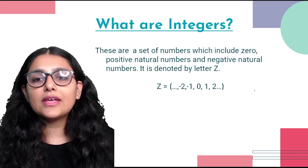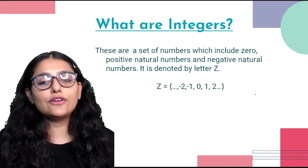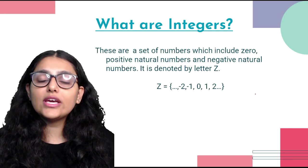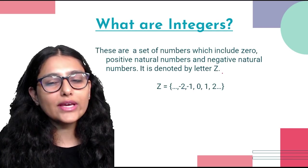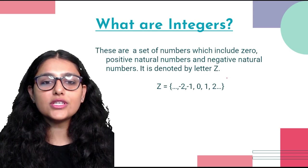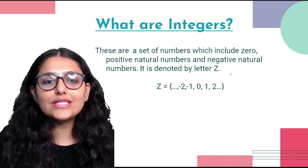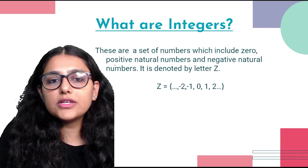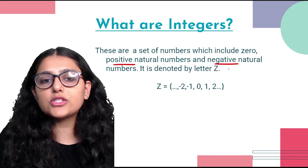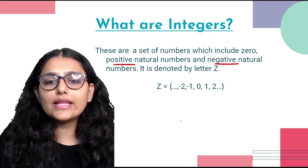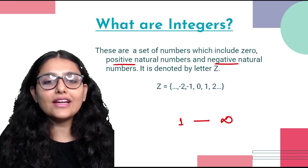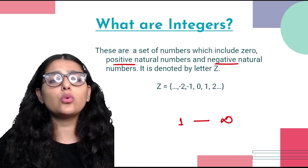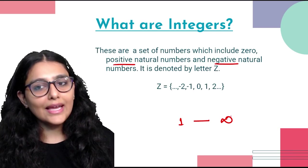So what are integers? We have studied about different kinds of numbers like whole numbers, natural numbers, fractions, and integers. Integers are a set of numbers which include zero, positive natural numbers, and negative natural numbers. Positive natural numbers go from 1 to infinity — counting does not end. You can count up till a million, billion, trillion, quadrillion — it won't end.